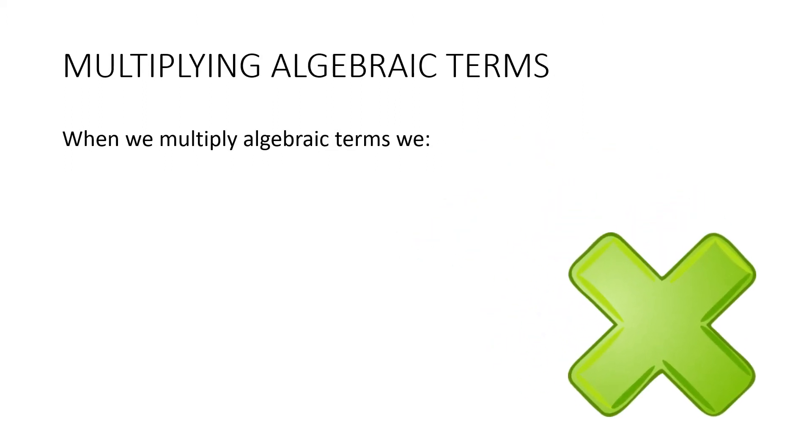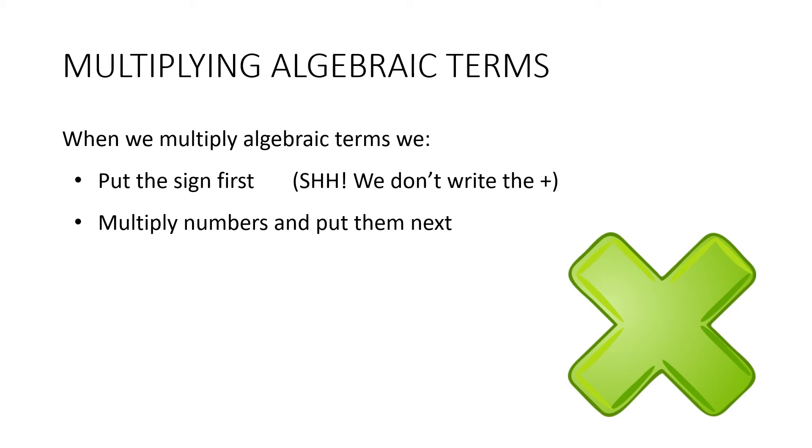When we multiply algebraic terms, we put the sign first. That means the plus or the minus sign. But we don't write the plus sign, remember? We multiply the numbers and we put them next. And then we put the pronumerals in alphabetical order.